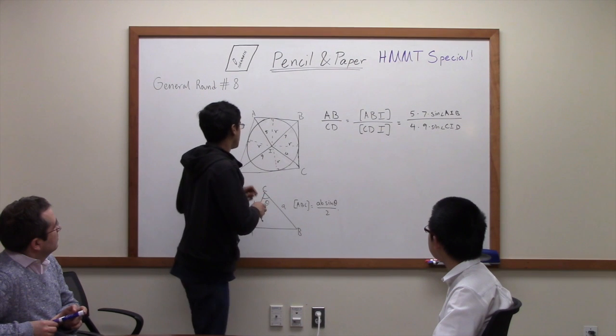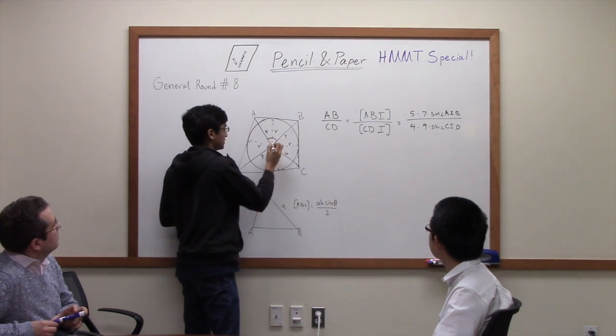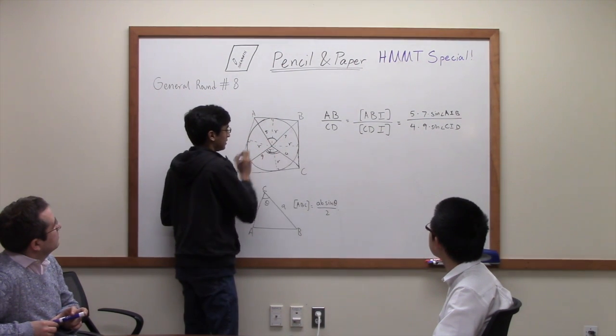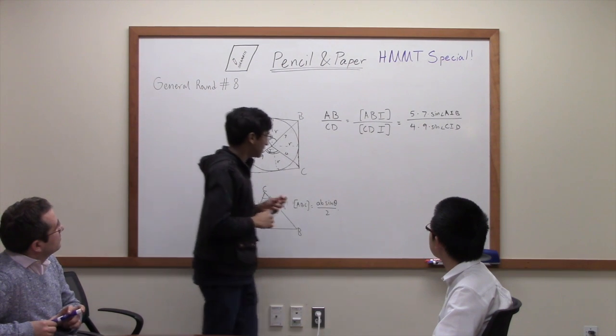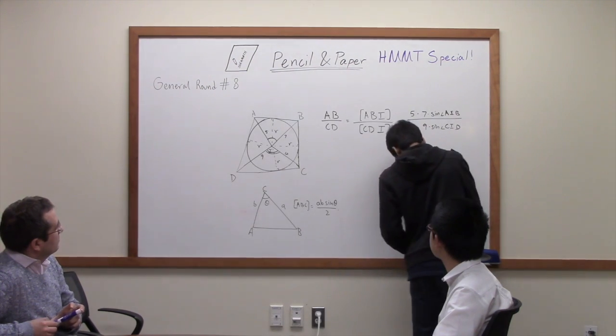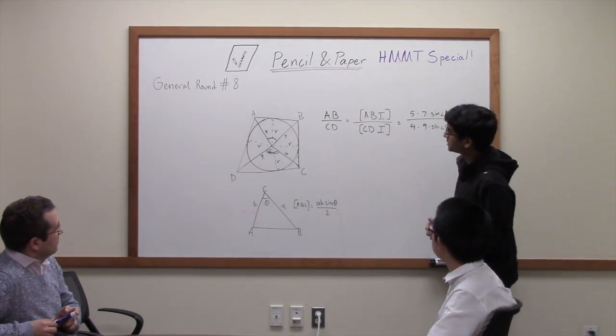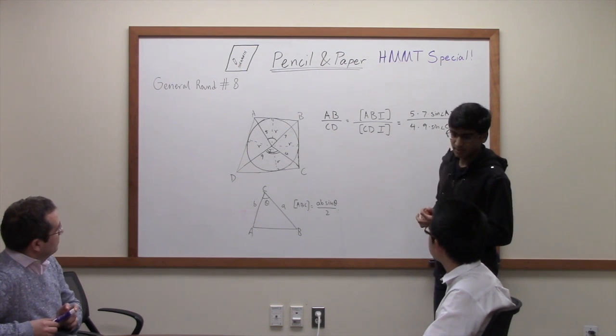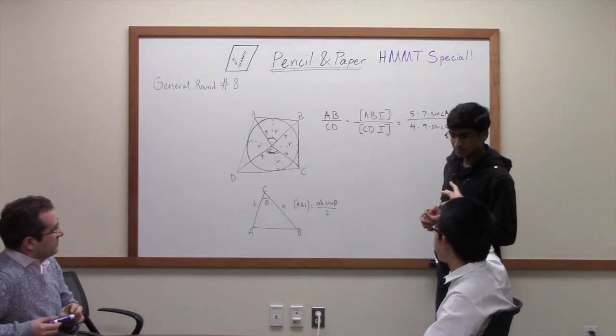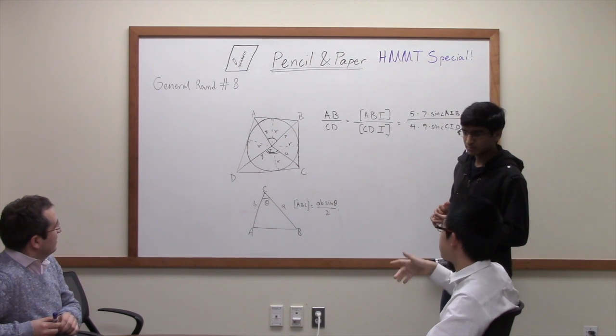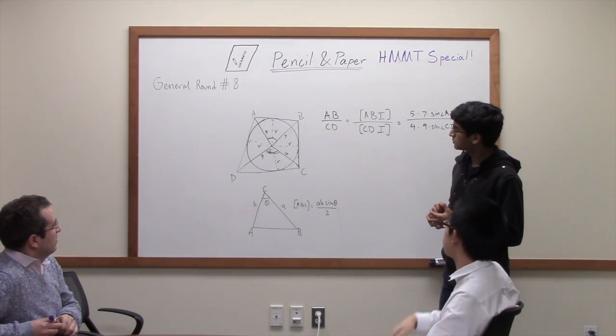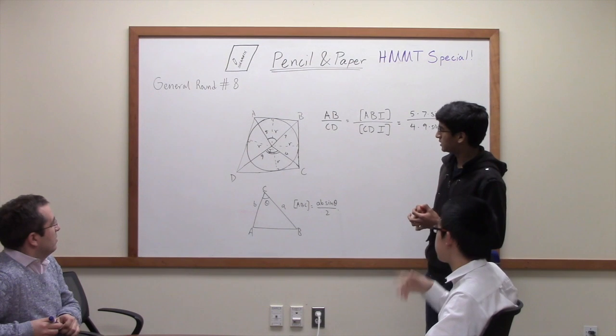So now all we need to do is find the ratio of the sine of this big angle to the sine of this big angle. But we don't seem to know much about those angles. Something we really wish is that the sines cancel somehow. So either they are equal or they are complementary.